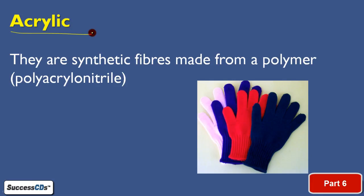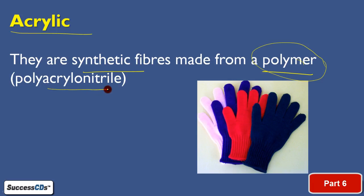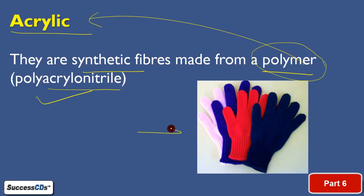Now we move on to another synthetic fiber — acrylic. Acrylic is made from chemical resources and is again a polymer, meaning a giant molecule formed by combining many small units. Those small units are called acrylonitrile. As you can see in the figure, the gloves you wear in winters are actually made up of acrylonitrile (acrylic).